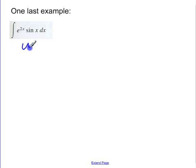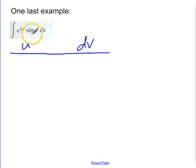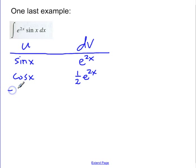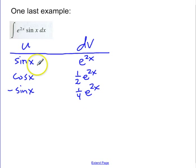Let me do one last example. According to LIATE, we should let a trig function be u before an exponential. So the derivative of sine is cosine, and the antiderivative of e to the 2x is one-half e to the 2x. The derivative of cosine is negative sine, and the antiderivative of one-half e to the 2x is one-fourth e to the 2x. I'm going to stop there, because I'm just going to go round and round in circles and repeat myself — I'm never going to get this down to zero.